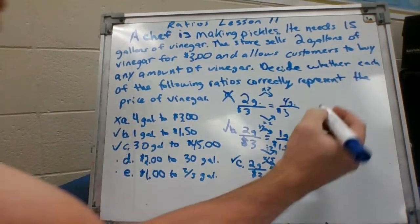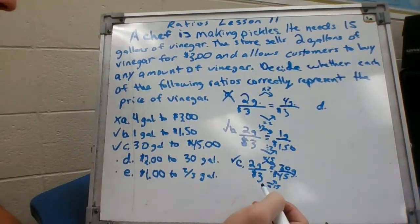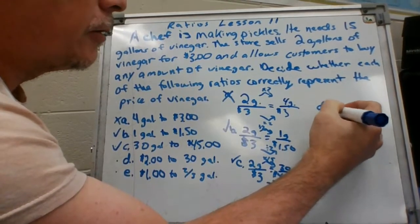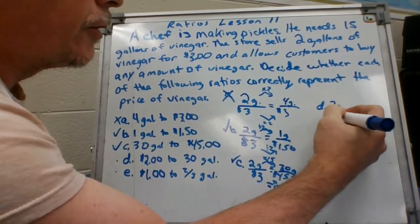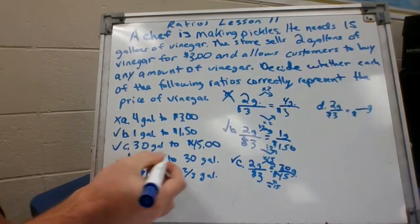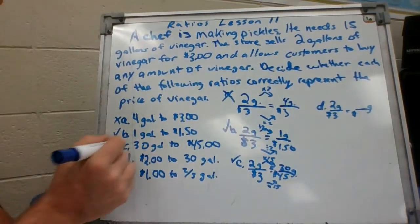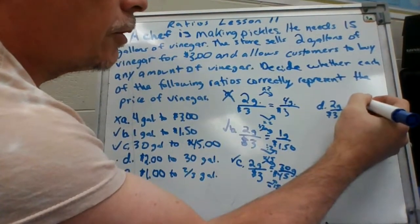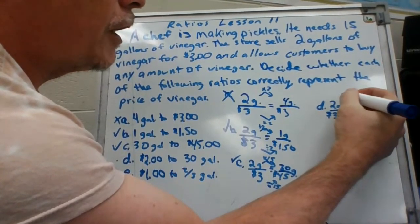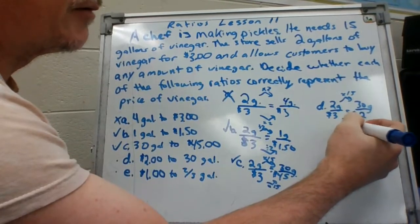We're gonna do D right here, we're gonna try to squeeze her in. Let's go ahead and do our given, two gallons over three dollars. D is two dollars to 30 gallons. To get from 2 to 30 we know we gotta multiply by 15, and see that's not going, if you multiply by 15 you're not gonna get to 2, so that's a no go.